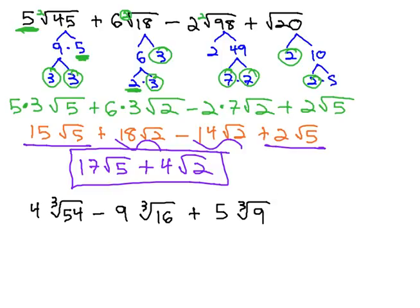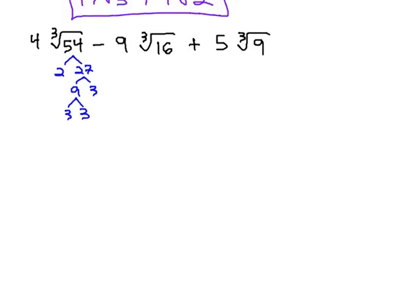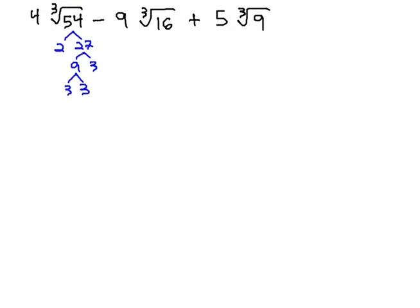Again, with 4 cube root of 54, minus 9 cube root of 16, plus 5 cube root of 9, we want to simplify the 54 by factoring. 2 times 27, 27 is 9 times 3, and the 9 is 3 times 3. Let's scroll to get us a little more space. And because we have a cube root, we're looking for groups of 3, and we do have a triplet on the 3's. Using the number in front, we have 4 times 3, cube root of the 2, which remained in the radical.